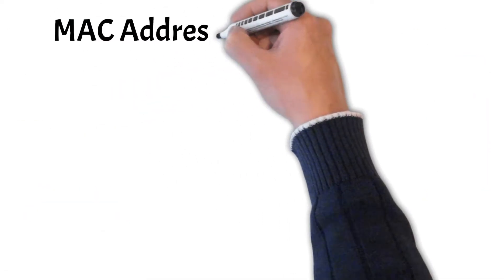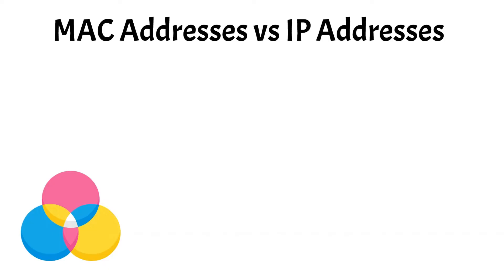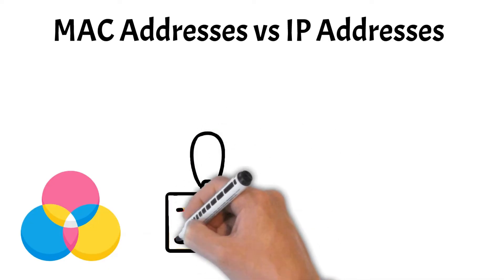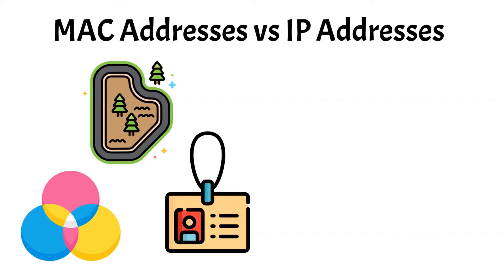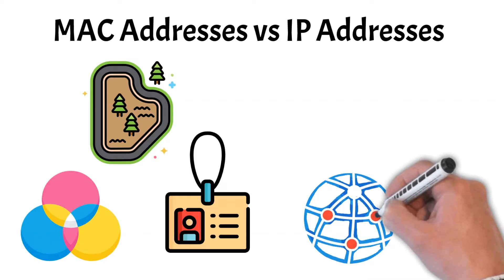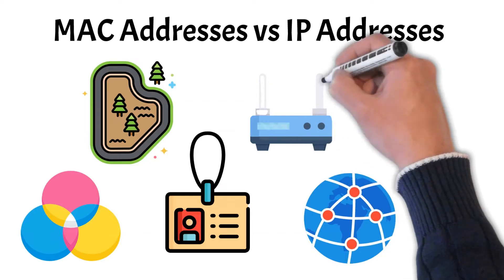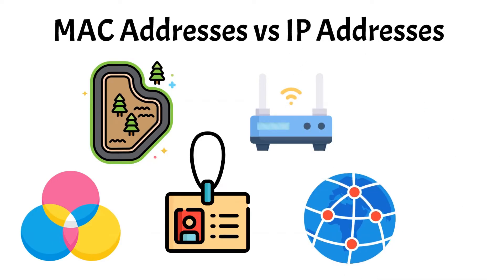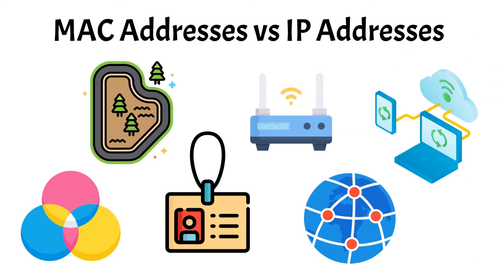Now let's take a look at the differences between a MAC and an IP address. MAC addresses and IP addresses both play crucial roles in networking, but they serve different purposes. A MAC address is a unique identifier assigned to each network device by its manufacturer. It remains constant and is used to ensure that data packets reach the correct device within a local network. On the other hand, an IP address, or Internet Protocol address, is assigned to devices to identify them on a broader network like the Internet. Unlike MAC addresses, IP addresses can change depending on the network a device is connected to, and they help route data across various networks. Essentially, while MAC addresses act like permanent, internal identification tags, IP addresses function as dynamic addresses that facilitate communication between devices over different networks. If you want to learn more about IP addresses, feel free to check out our video on the topic in the description below.